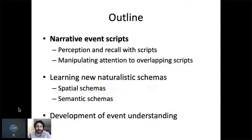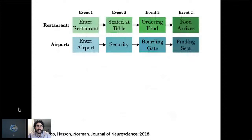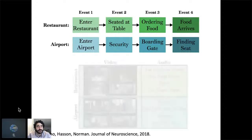First I'll talk about narrative event scripts. This was a project I ran at Princeton at the end of my postdoc, where we showed people a bunch of different stories that came in one of two flavors: restaurant stories where people go through a typical restaurant experience, or airport stories of people boarding a plane. Although these stories conform to one of these two schemas, we tried to make them as different as possible in every other dimension — some were movies, some were audiobooks, the characters are different, the types of narratives are different, some are rom-coms, some are thrillers. But we edited them so they all conform to the same kind of sequence of events.